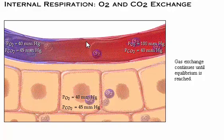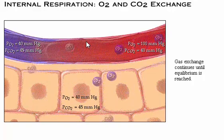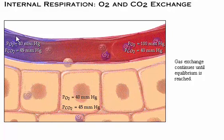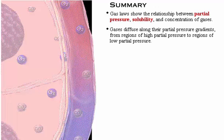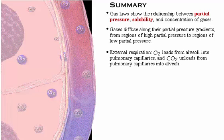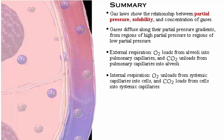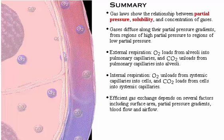The oxygen-poor blood now returns through the systemic veins to the right side of the heart. Gas laws show the relationship between partial pressure, solubility, and concentration of gases. Gases diffuse along their partial pressure gradients from regions of high partial pressure to regions of low partial pressure. During external respiration, oxygen loads from alveoli into pulmonary capillaries, and carbon dioxide unloads from pulmonary capillaries into alveoli. During internal respiration, oxygen unloads from systemic capillaries into cells, and carbon dioxide loads from cells into systemic capillaries. Efficient gas exchange depends on several factors, including surface area, partial pressure gradients, blood flow, and air flow.